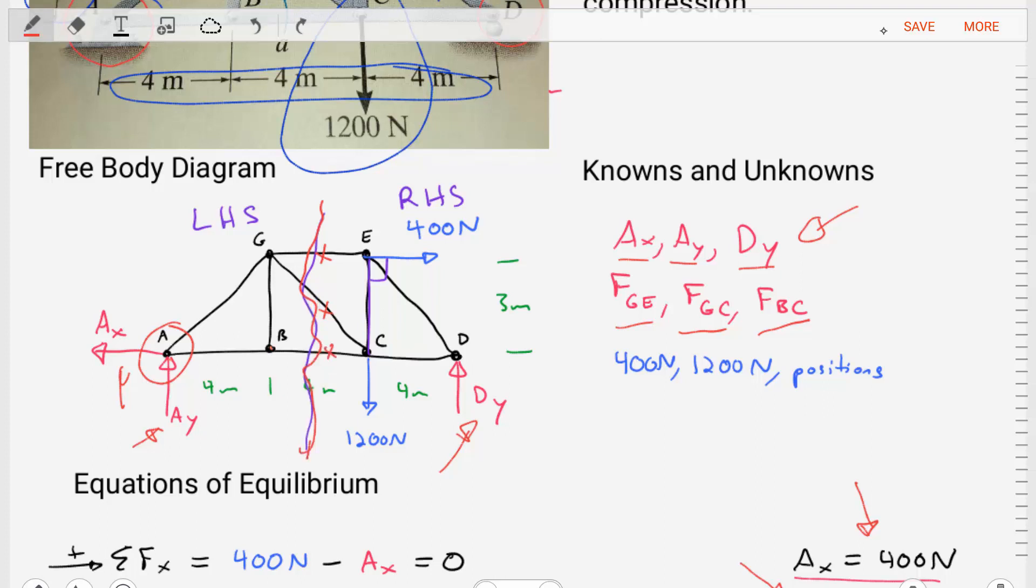We drew this line here in the middle. We could take the left-hand side or the right-hand side. Because we are assuming that there is equilibrium in the entire structure, equilibrium will also exist in each half, the left-hand side or the right-hand side. So either one of those choices will give us the exact same final answers.